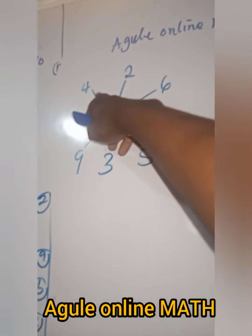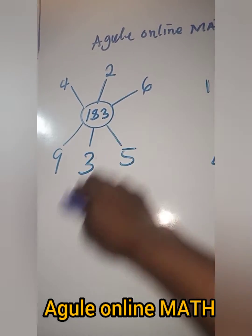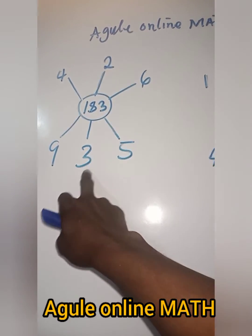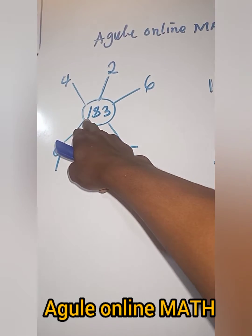So we have 2, 3, 6, 9, 3, 5. How are we going to get 183?